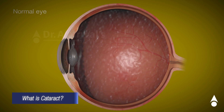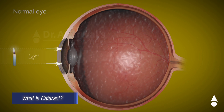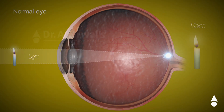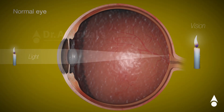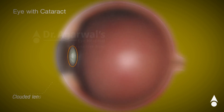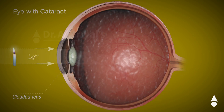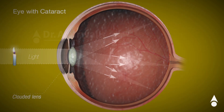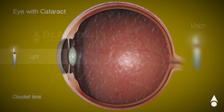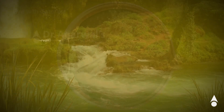What is cataract? Light falling on a normal eye gets focused on the retina, giving clear vision. In eyes with cataract, the light travels through a clouded lens and gets scattered, compromising the quality of vision.